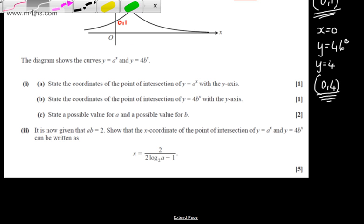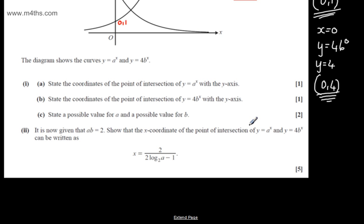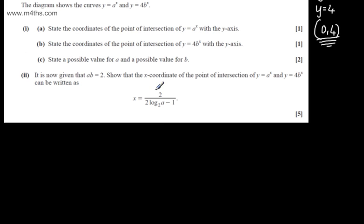Let's now move on to the second part for five marks. It says it is now given that ab equals 2. We need to show the x-coordinate of the point of intersection of y equals a to the x and y equals 4b to the x can be written as x equals 2 over 2 lots of log to the base 2 of a minus 1. This doesn't have a term with b in it, so I'm going to set up simultaneous equations and make the substitution, writing b equals 2 over a.